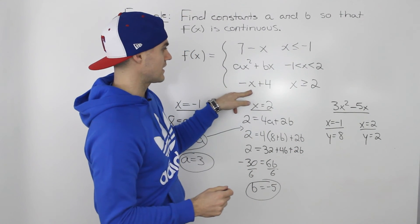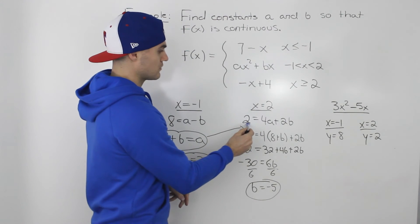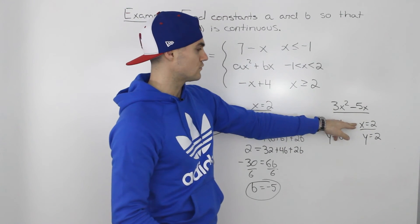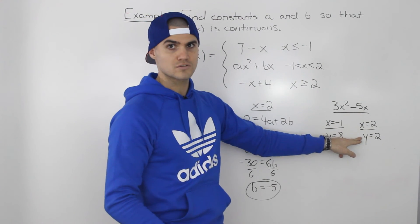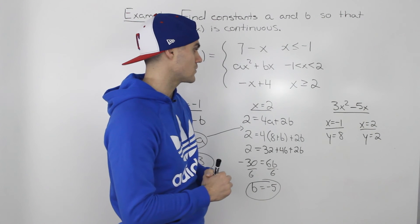For this piece at x equals 2, the y value that we found was 2. And if we plug in 2 for x in our new middle function, then the y value is also 2. So we know it's continuous at that meeting point as well.